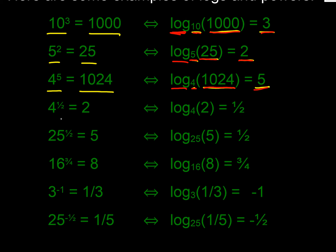4 to the power of a half — we know that's the square root equivalent — 4 to the power of a half is 2, so log base 4 of 2 is a half: what power must we apply to 4 to get 2? Answer: a half. And 25 to the half is 5, so log base 25 of 5 is a half.